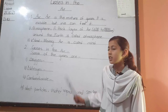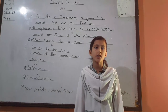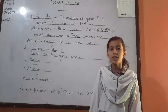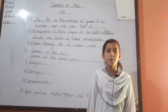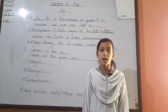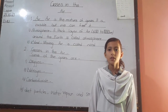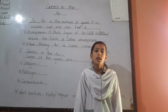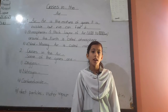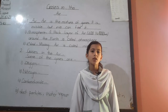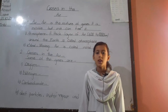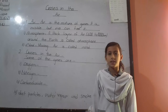Nitrogen: the most part of the air is nitrogen. Nitrogen is 78% of air. When we breathe, nitrogen passes in and out of our body.